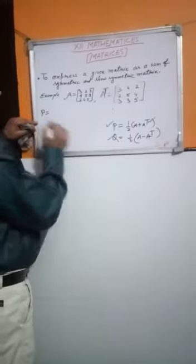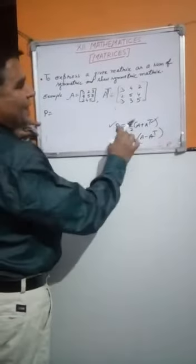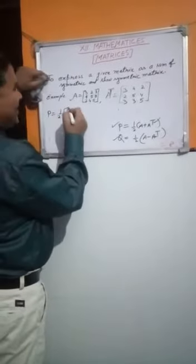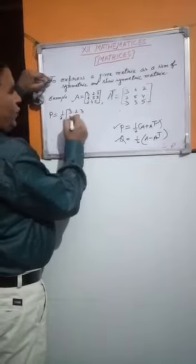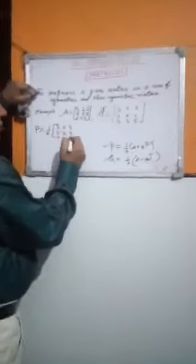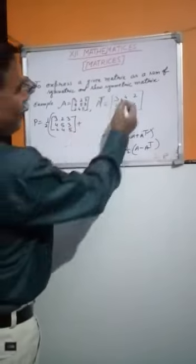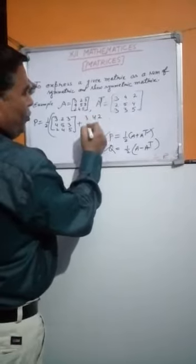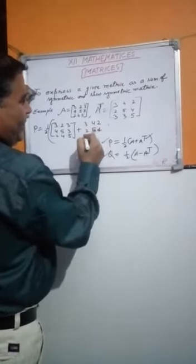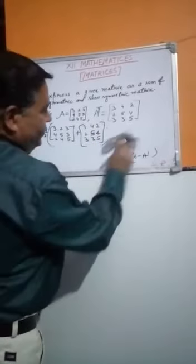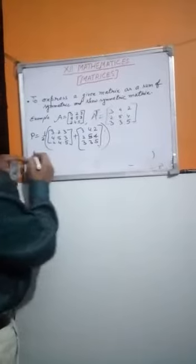The first step is done. Now, the second step: P equals half of A plus A transpose, where P is the symmetric matrix. So P = half of A, which is three, two, three; four, five, three; two, four, five — plus A transpose, which is three, four, two; two, four, five; four and three, three, five.